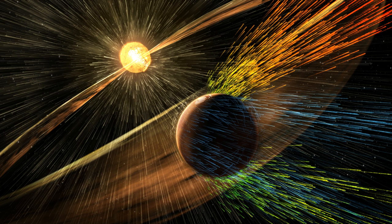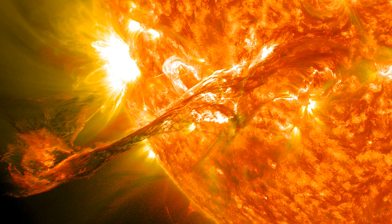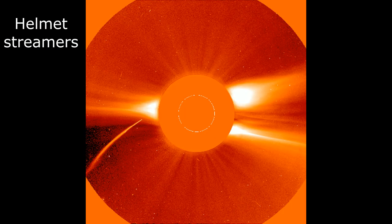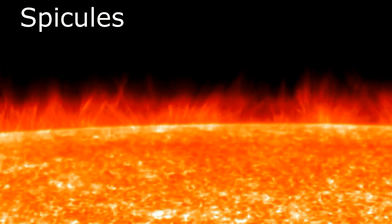We consider the Sun's magnetic field, or the interplanetary magnetic field (the IMF), as a separate phenomenon to the solar wind, prominences, polar plumes, helmet streamers, spicules, etc. But all these phenomena are actually features of the same structure.